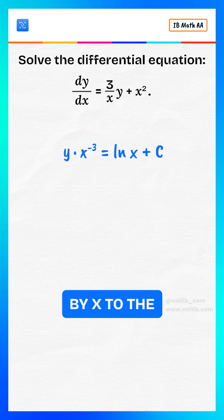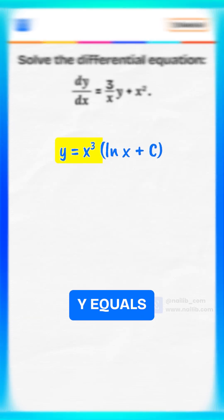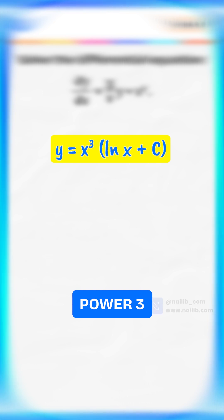Multiply both sides by x³. Hence, y = x³(ln(x) + c).